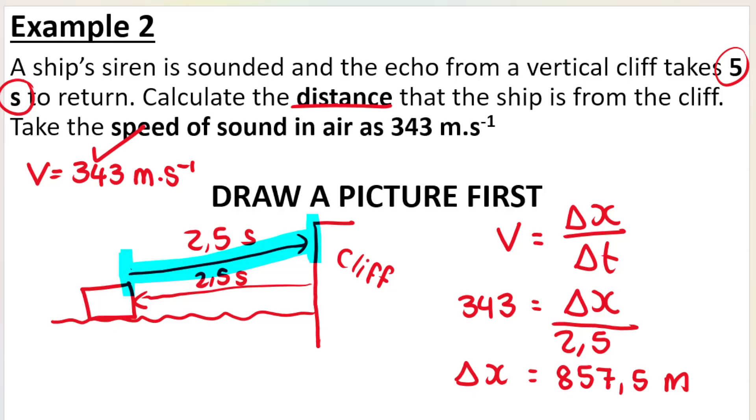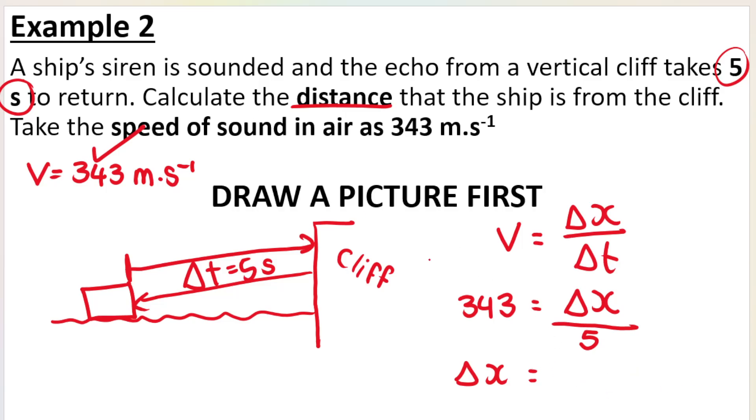Now you could say to me, but what if I decided to use the full five seconds? Let's see what happens if I use the full five seconds. Remember the full five seconds is the time that it took the sound to be released from the ship siren to the cliff and back again. If I decide to use the full time, I'm going to keep the speed the same. Time will be five seconds. I will get 1715 meters. It's very important to understand that that distance is the distance from the ship siren to the cliff and back because I'm using the full five seconds. And I don't want the distance there and back. I want the distance that the ship is from the cliff. So then I would have to take that distance 1715 and divide it by two. And I would end up getting the exact same distance as I would have gotten if I just used 2.5 seconds.